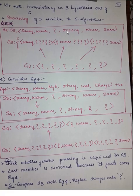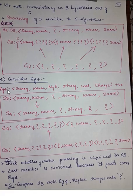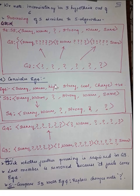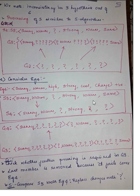Now coming to the last example, example 4. This is a positive instance. Compare S3 with example 4 — wherever there is a change, put a question mark. Sunny is the same, warm is the same. For the third attribute, any comparison with a question mark remains a question mark. The fourth attribute is the same. The fifth and sixth attributes are different, so put a question mark for each. This gives us the new specific hypothesis S4.